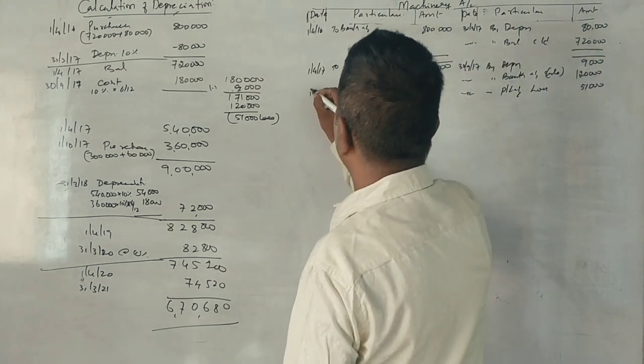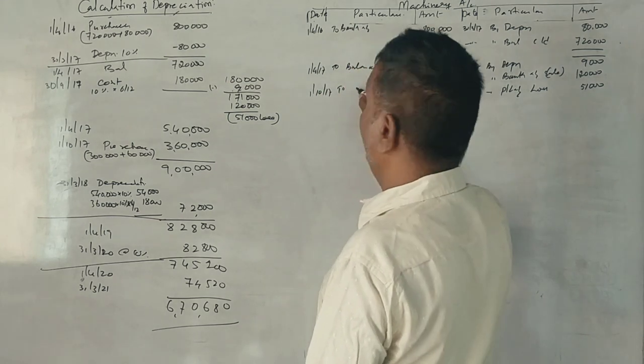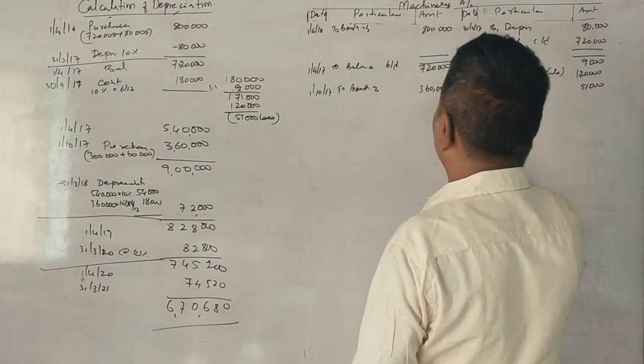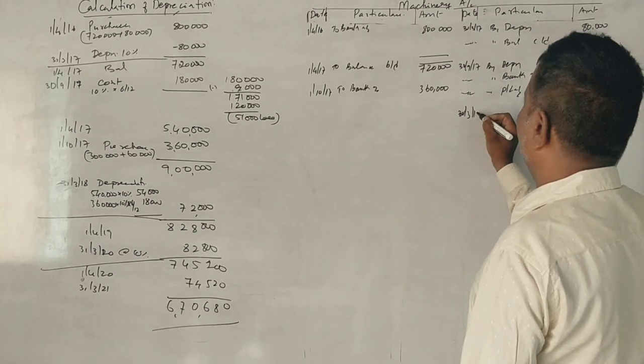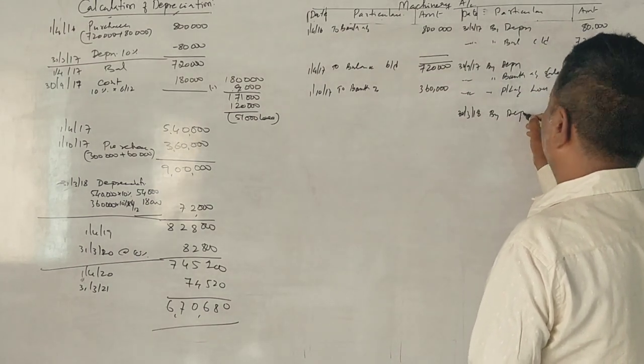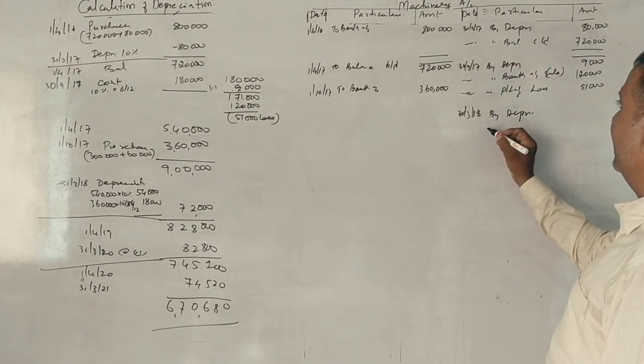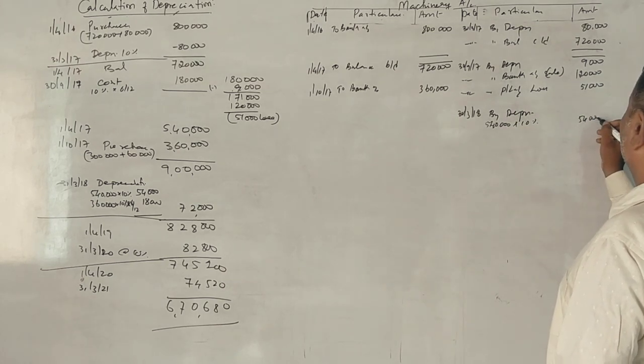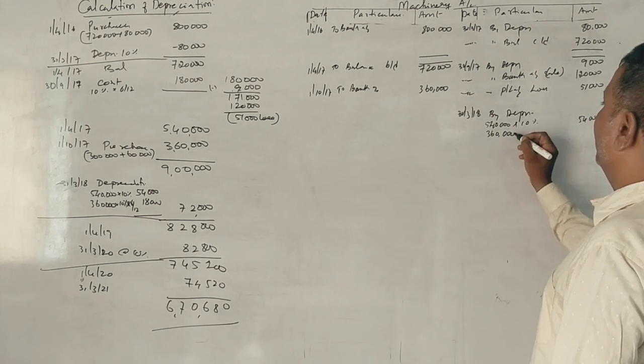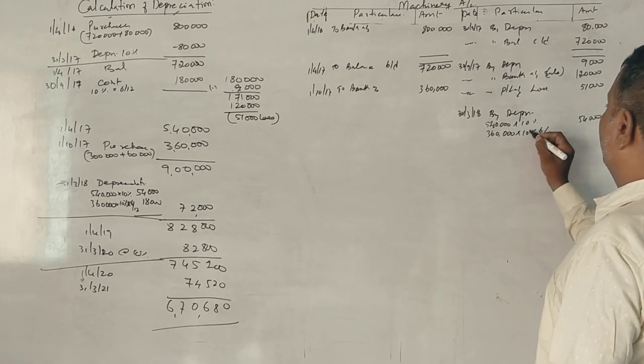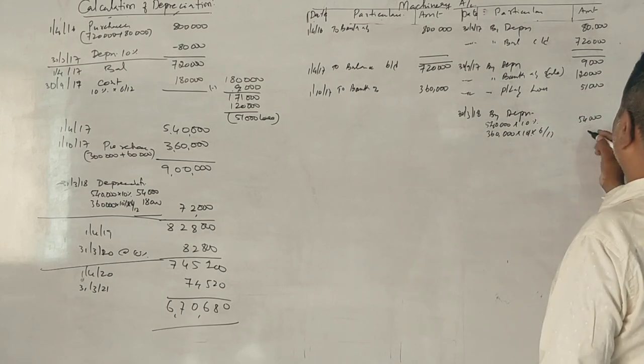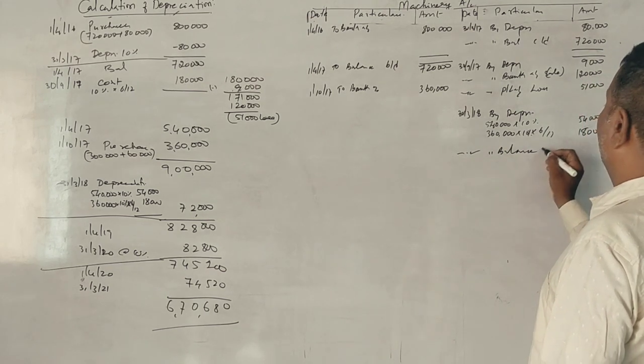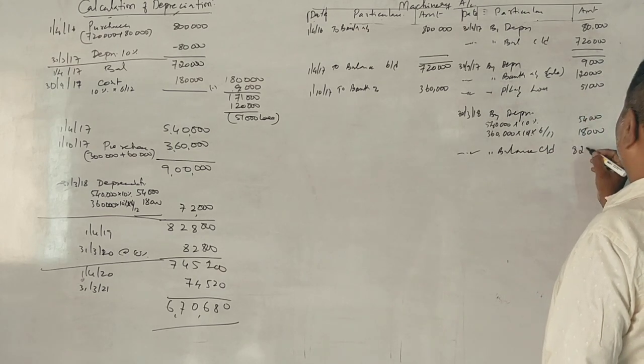1st October 2017, to bank account, machinery purchase $360,000. 31st March 2018, by depreciation. $540,000 at 10% is $54,000. $360,000 at 10% for 6 months is $18,000.